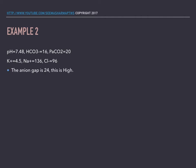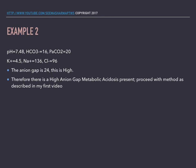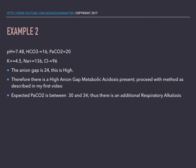For the second example, we again first calculate the anion gap, and it's 24, which is high. Therefore, there is a high anion gap metabolic acidosis present, and we're going to proceed with the method as described in my first video. The expected pressure of carbon dioxide is between 30 and 34.